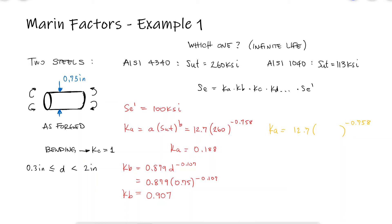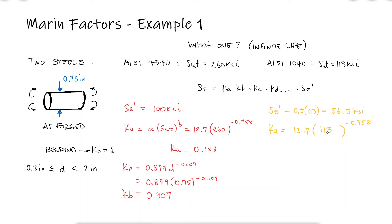For the 1040 steel, the rough estimate SE' is half of the ultimate strength since 113 KSI is not above 200 KSI. The surface factor Ka, using 113 KSI, yields a value of 0.353. Since the size factor Kb depends only on diameter and the diameter is the same, Kb is the same value of 0.907 for both materials. Kc also equals 1 for both, since both rods are subjected to bending.